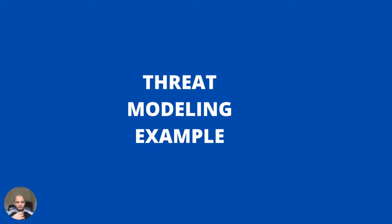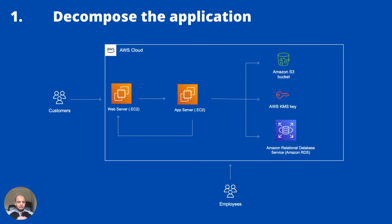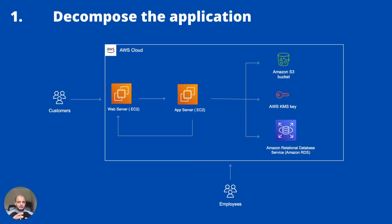Remember the three main steps: what are we doing, what can go wrong, and what can we do about it. Step one — 'what are we doing' — means decomposing the application. You gain an understanding of what the application does, how it interacts with different entities. You can create a data flow diagram or an architecture diagram, go over the use cases, identify entry points, and fully understand the application without yet thinking like an attacker.